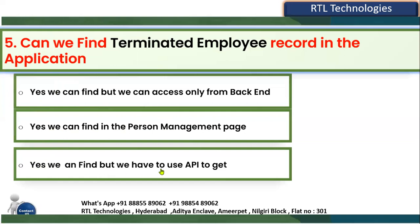APIs are generally used for data insertion and retrieval, but there's no specific API needed just to get terminated person records. The correct answer is that we can find the terminated employee from the Person Management page. There is a checkbox called 'Terminated Records' — if you check that checkbox, it will show the terminated employee's information. You can also access records from the backend via BI reports, but it is not only accessible from the backend. You can directly access them from the front end.